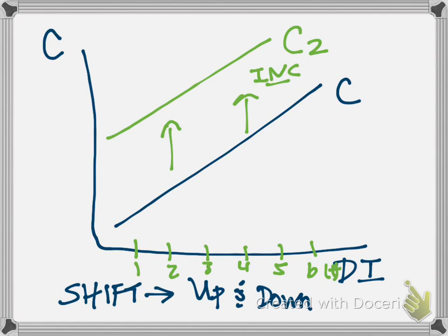On the other hand, if we wanted to show a decrease in our consumption, then we would shift the line down to this red line. I'm labeling it as C3. So what are some of the things that will cause the consumption function to shift?